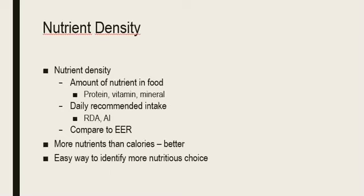Nutrient density is the amount of a nutrient in a food relative to the daily recommended intake — the RDA and Adequate Intake. When looking at nutrients, you compare the protein, vitamin, and mineral content in a food, then divide the calories in a serving by the Estimated Energy Requirements to determine daily calorie needs. If a food has a higher percentage of nutrients in relation to its calories, that food has a higher nutrient density. The higher a food's nutrient density, the better it is as a source for that particular nutrient.